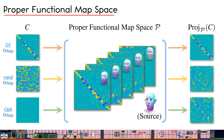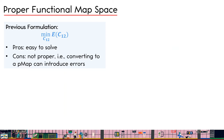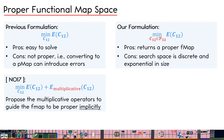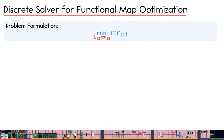This motivates our formulation: it is important to solve for a proper functional map during optimization. In the standard pipeline, we usually optimize without any hard constraint — this is easy to solve but the output is usually not proper. In 2017, multiplicative operators were proposed to guide the optimization towards proper functional maps, but since this term is a soft regularizer, there is still no guarantee. In our work, we propose to optimize in a constrained setting, always constraining the variable functional map C to be proper, guaranteeing the output is always a proper functional map.